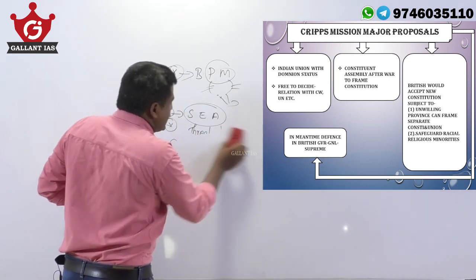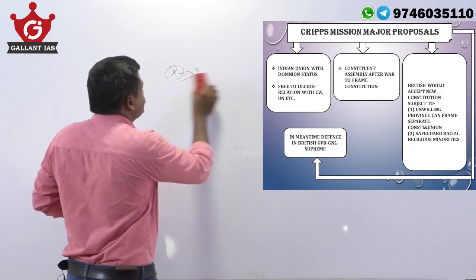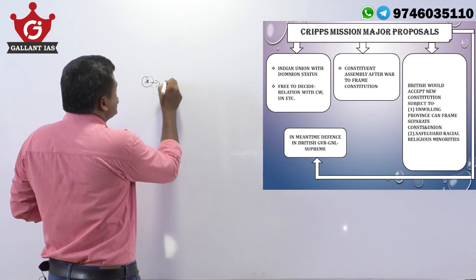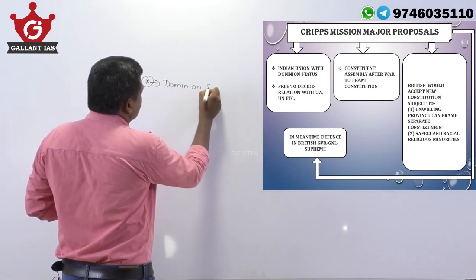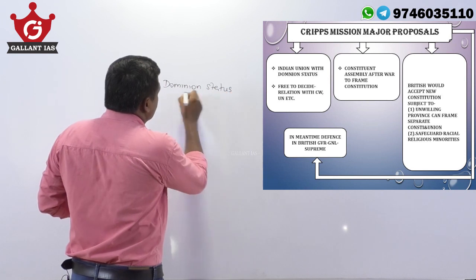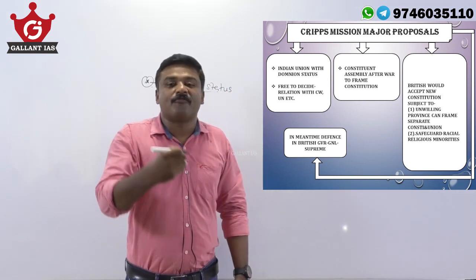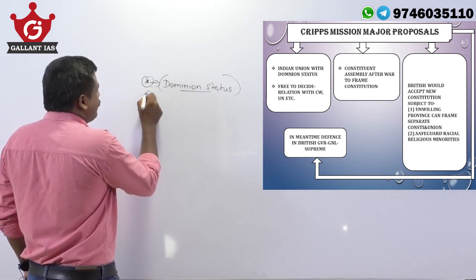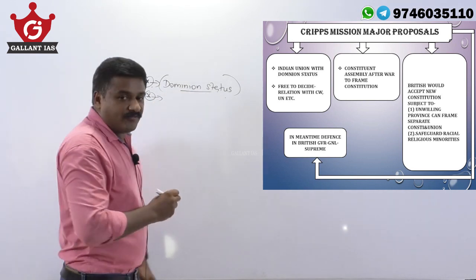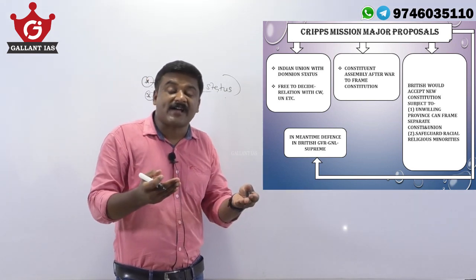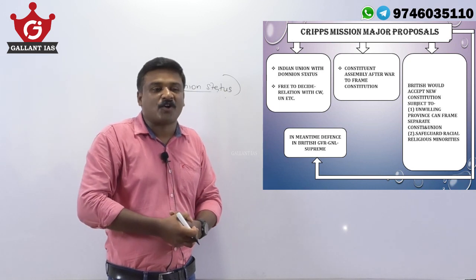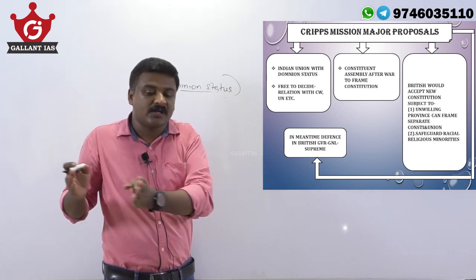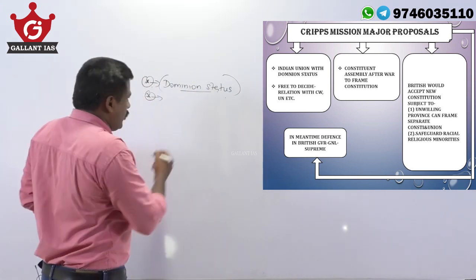Now, what were the major proposals of Cripps Mission? Number one: it offered Dominion status. As the speaker puts it, 'we are demanding for life and they are offering us jackfruit.' So Dominion status was offered, and India would be free to decide its relations with the Commonwealth of Nations — whether to be part of it or keep separate.